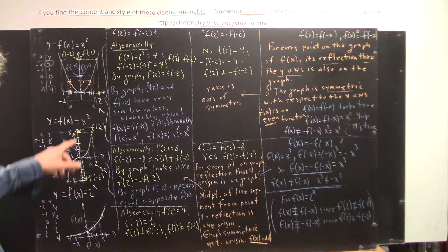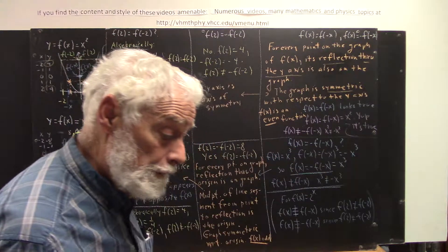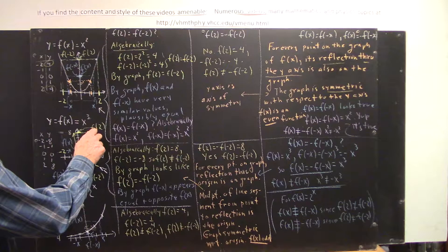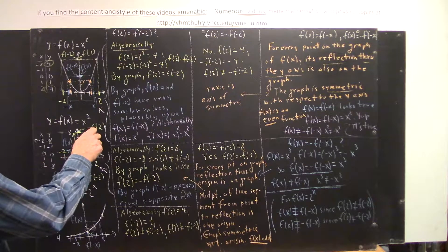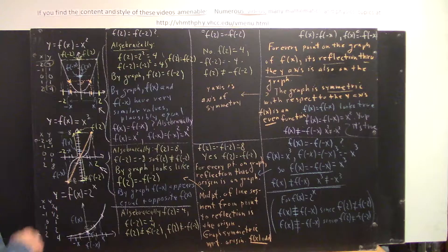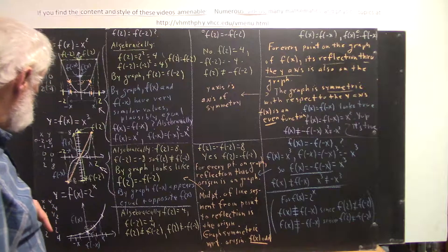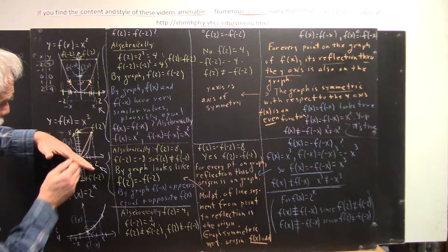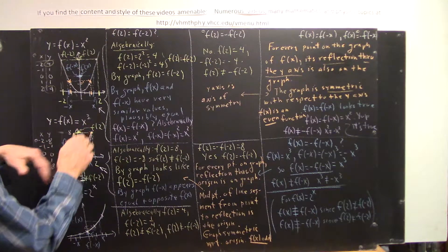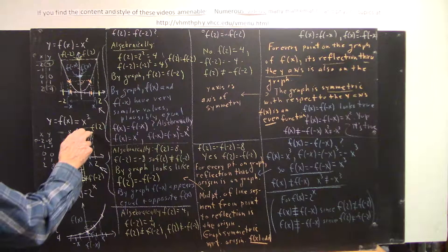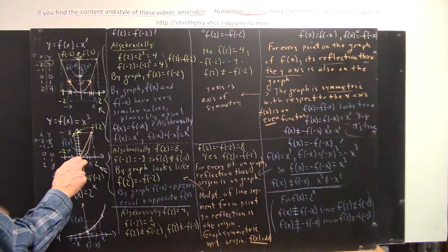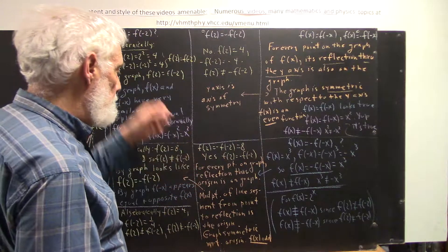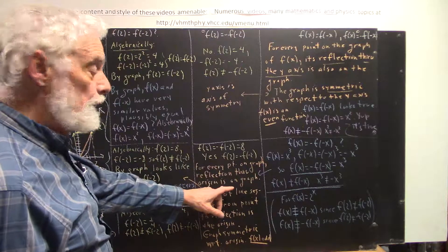By contrast, for the x³ function, f(x) is equal to the negative of f(-x). If I take the x = 2 point and the x = -2 point and connect them with a straight line, that straight line goes through the origin. So in this sense, if there's a mirror at the origin pointed at this angle so that it would reflect this point right back to itself, then the reflection through the origin would be here. The reflection of this point would appear to be down here — so this point is the reflection of that point. For every point in the graph, the reflection through the origin is on the graph.